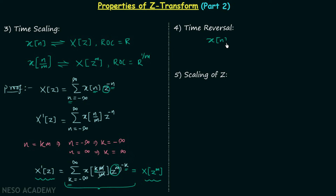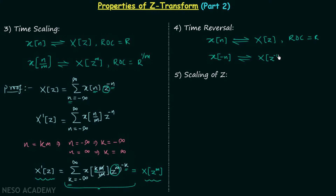Let's say there is a discrete time signal X(n) having Z transform X(z) and region of convergence R. Now we perform time reversal on X(n) to get a new signal X(-n). If you look at the time scaling property and put m = -1, you get X(-n), and for X(-n) the Z transform is X(z^(-1)). The region of convergence will be R^(1/(-1)) = R^(-1) = 1/R. So remember the time scaling and time reversal properties of Z transform.